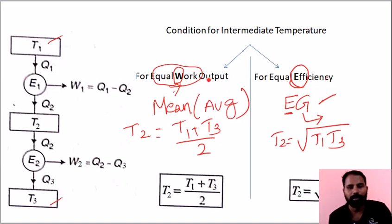To avoid confusion between the two means, remember EG as the shortcut - efficiency equals geometric mean. Just remember this mnemonic for the formulas.